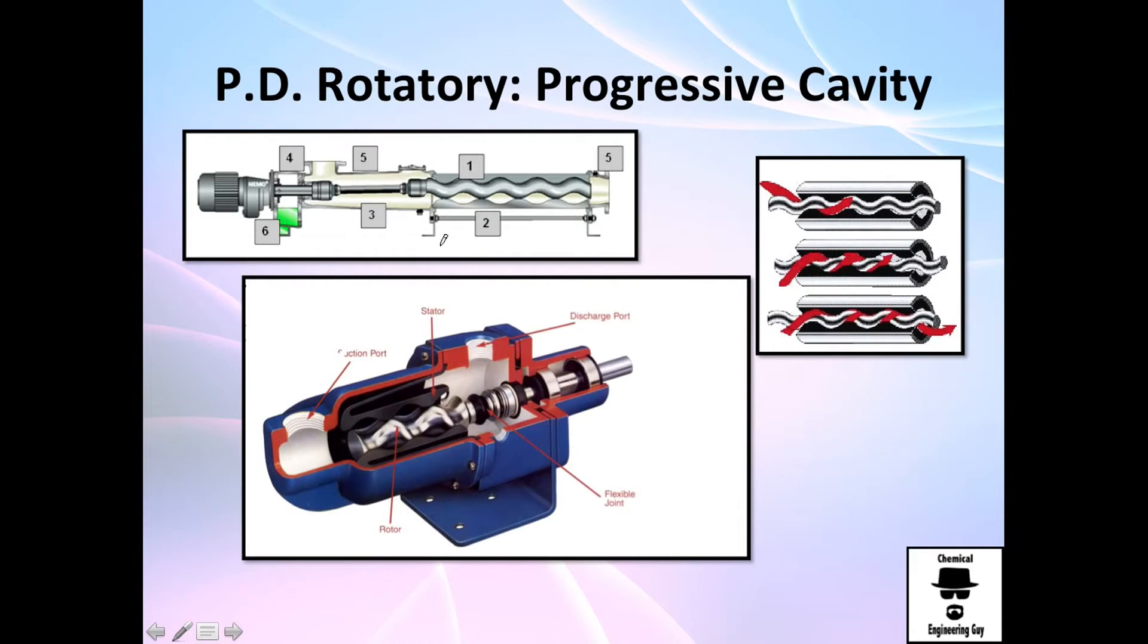Progressive cavity is pretty similar to the screw, but they have a very interesting shape. It's not a screw, but as you can see the fluid goes through here, here, here, here, and because this space is reduced—it's so small—the pressure will be increased right here.